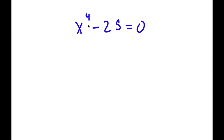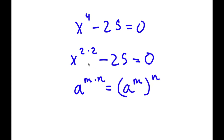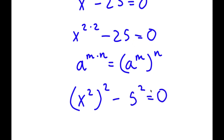In this problem, I have x to the power of 4 minus 25 is equal to 0. To solve this, I'm going to first rewrite x to the power of 4 as x to the power of 2 times 2. Using the rule a to the power of m times n equals a to the power of m to the power of n, I can write x squared to the power of 2 minus 5 squared equals 0.